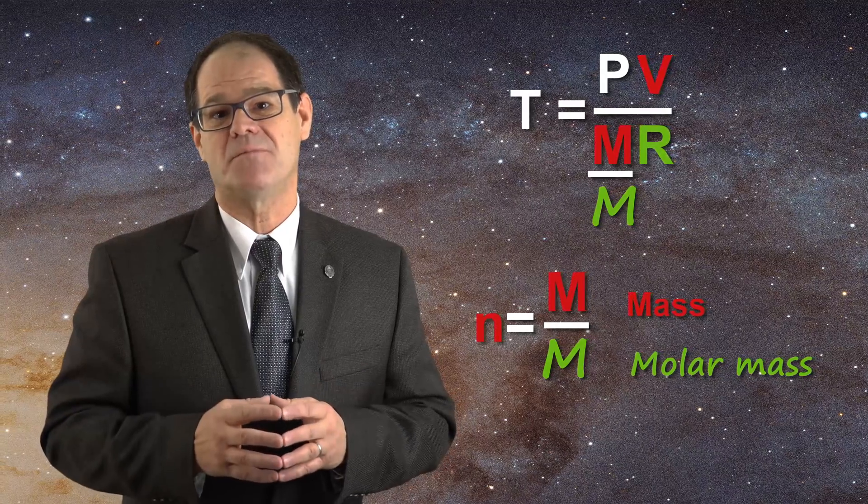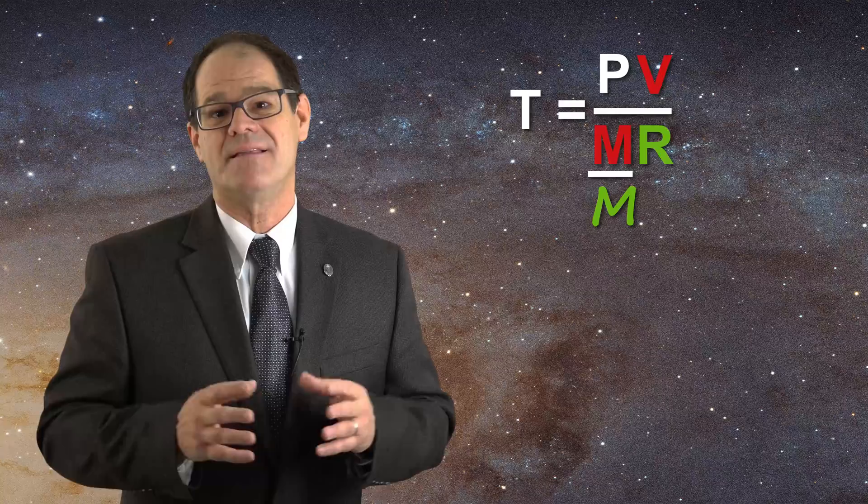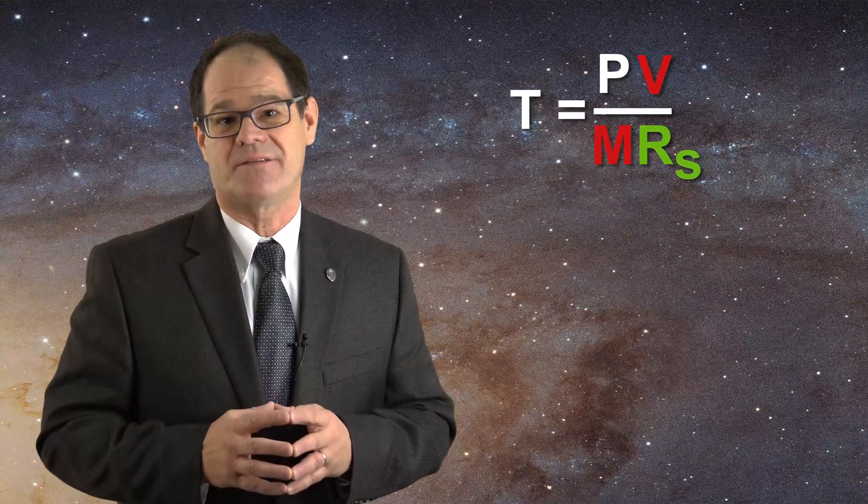For our helium-based system, the molar mass corresponds to about 4 grams per mole. In this case the mass of the system is now extensive, but the molar mass is a constant. Now if we divide the universal gas constant by the molar mass, we actually get a new constant called the specific gas constant R sub s.